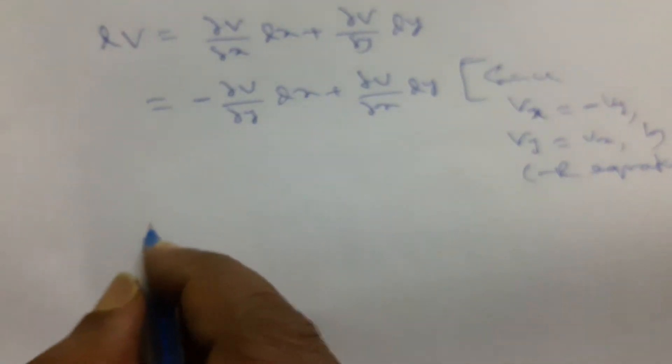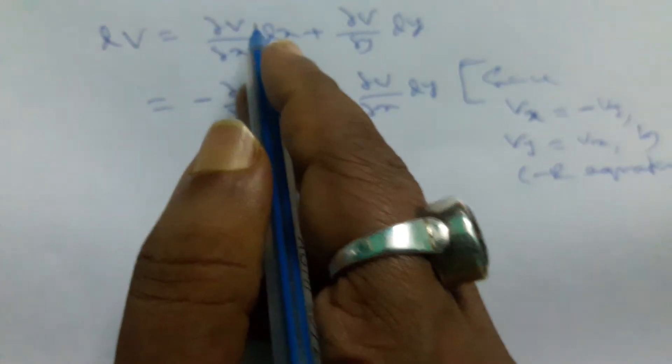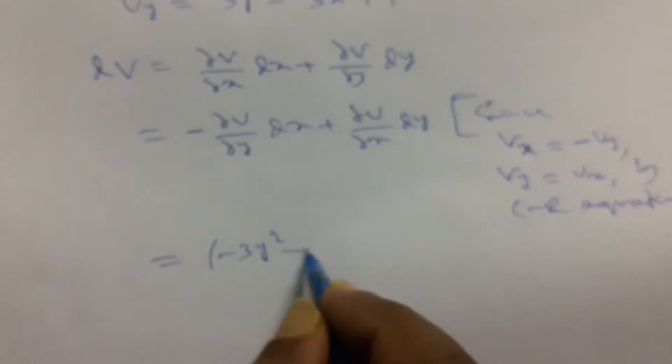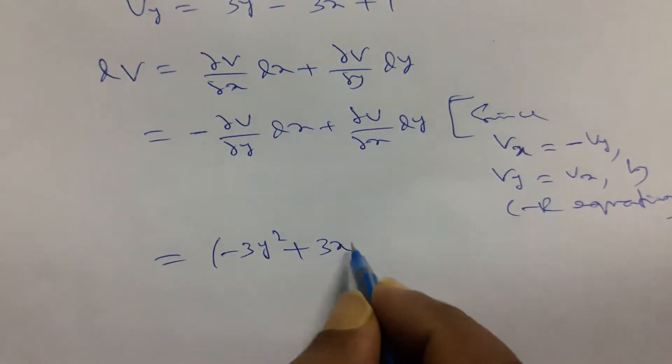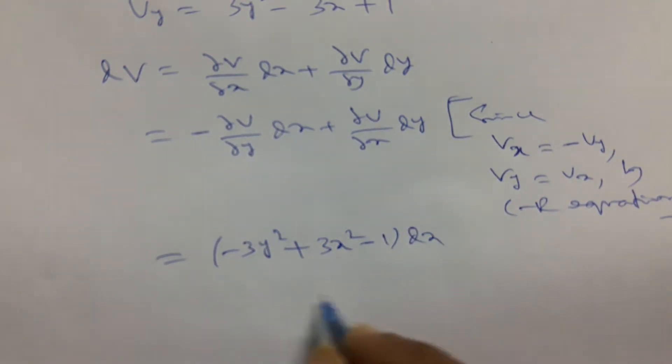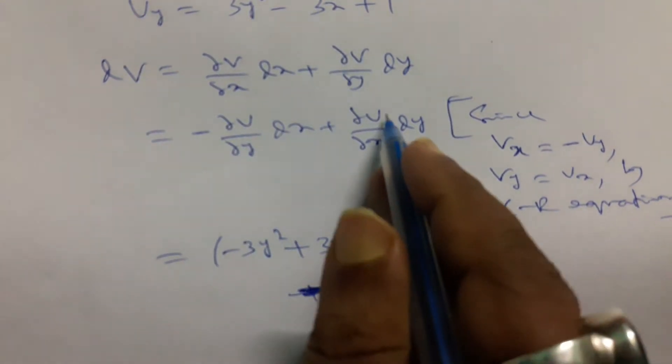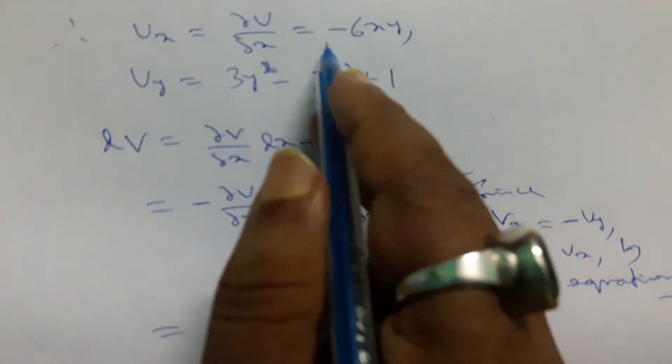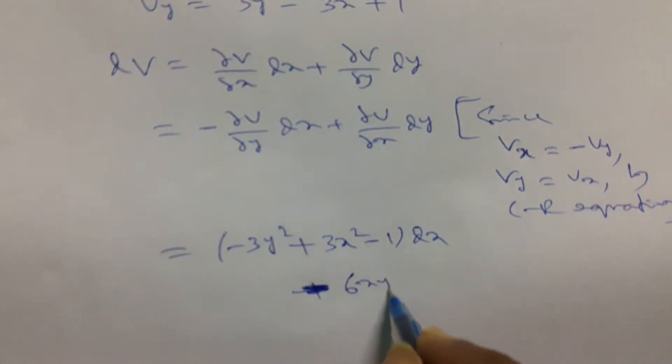Now we substitute in the value minus del u del y that will be this term minus 3y square plus 3x square minus 1 dx plus, it will be minus del u del x that will be 6xy dy.